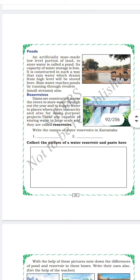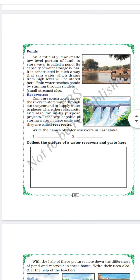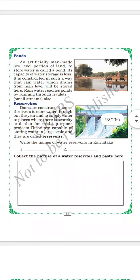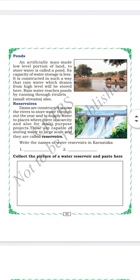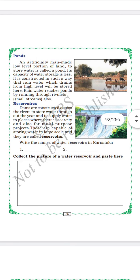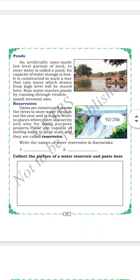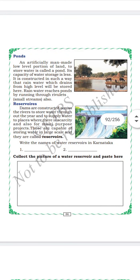Next is water reservoirs. Dams are constructed to stop the water and make a reserve of water. Big dams are constructed, and whenever we require water we can open the gates. Dams mean we build some obstacle opposite to a flowing water.